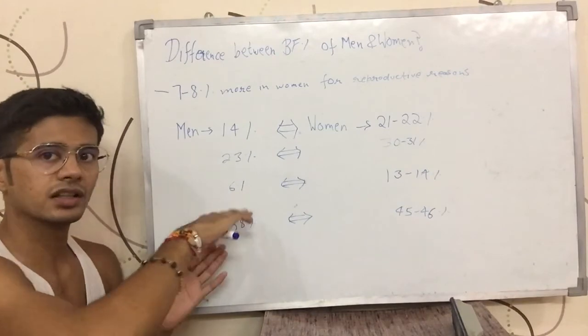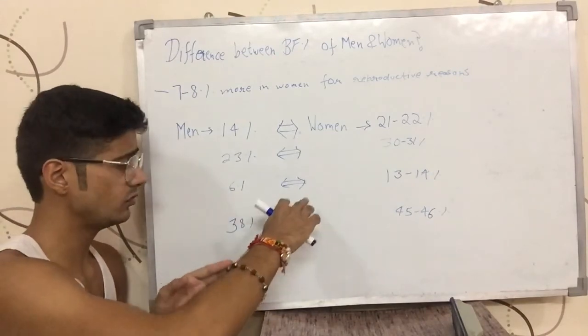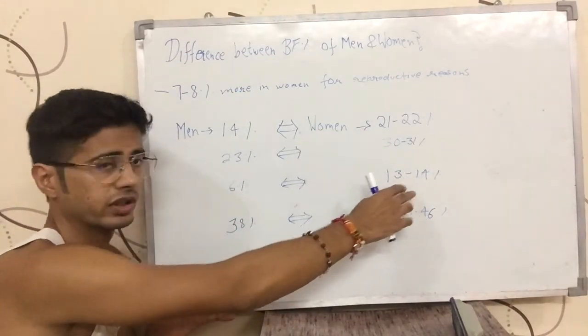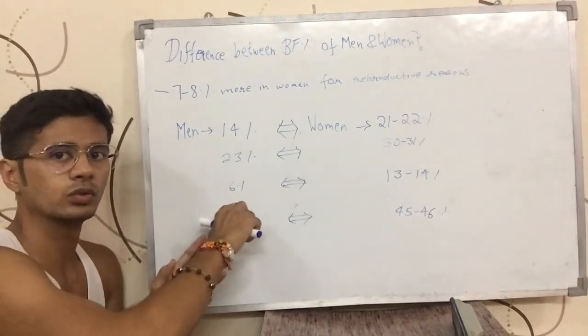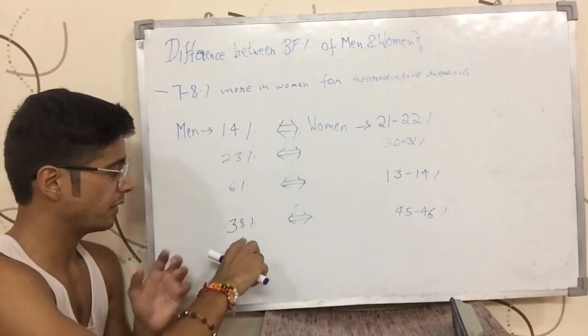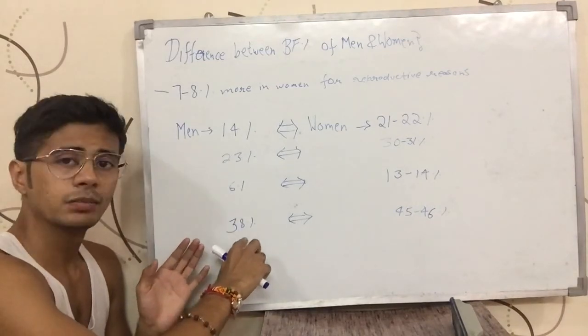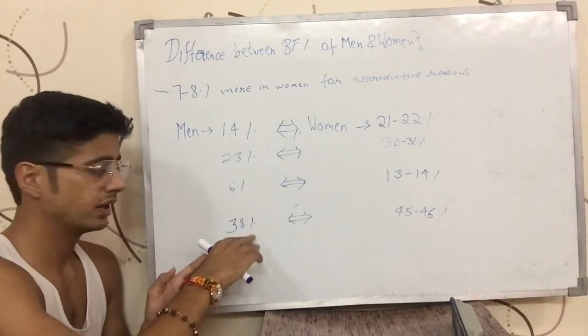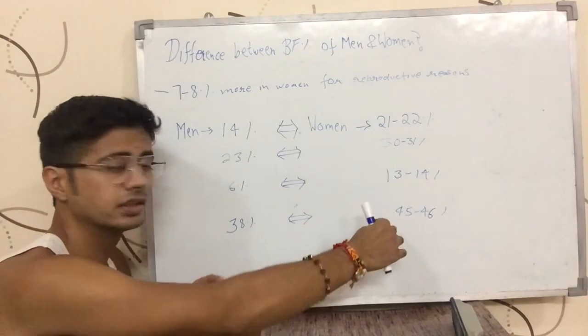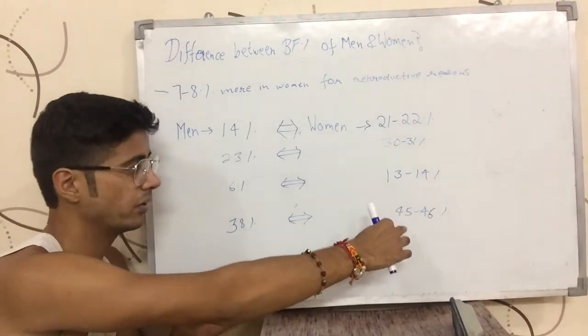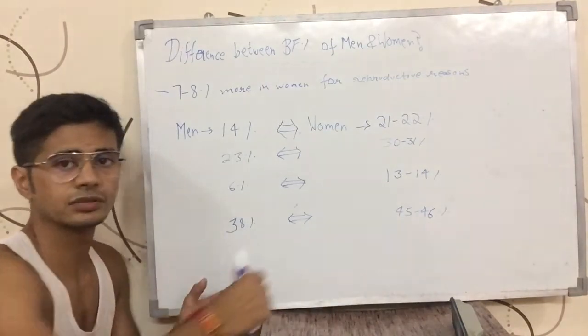If a man has 6 percent body fat, a similar fitness level woman would have 13 to 14 percent body fat, adding 7 to 8 to 6. If a man is obese and has 38 percent body fat, then a similar fitness level woman would have 45 to 46 percent body fat.